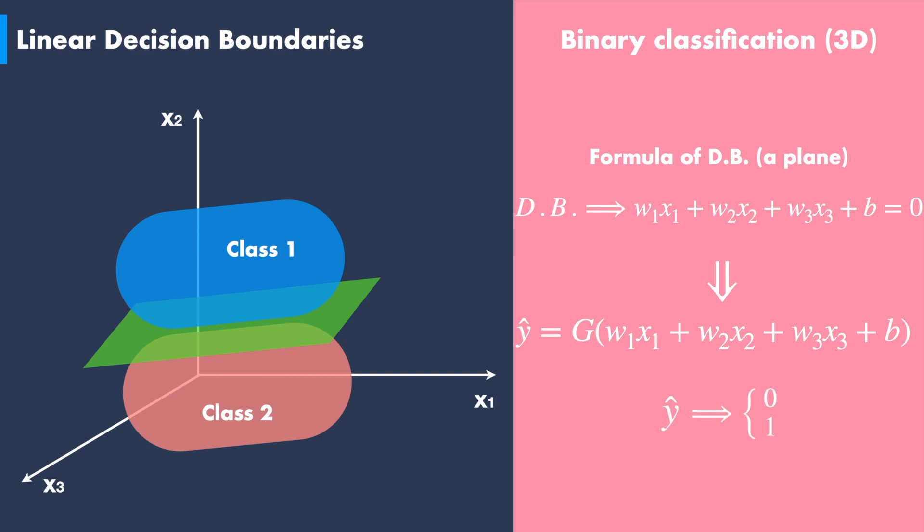Still, the y hat prediction takes the values of either zero or one, depending on the sign of the input equation.